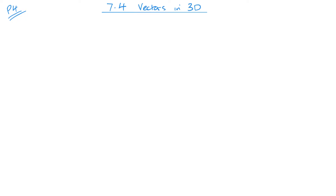Welcome to P4. Today we're looking at vectors in 3D, unit 7.4. We're moving past just 2D vectors and introducing that third dimension. The third dimension goes along the Z axis.